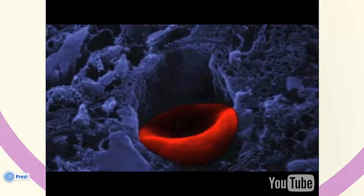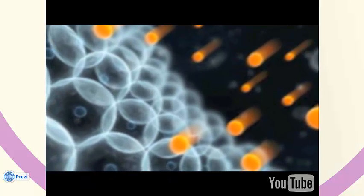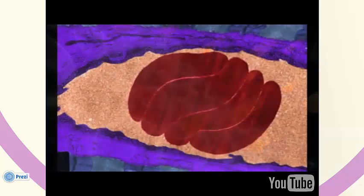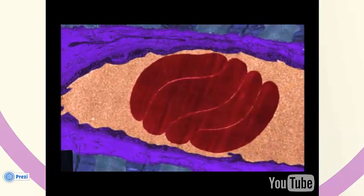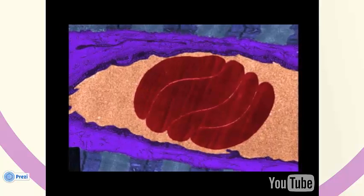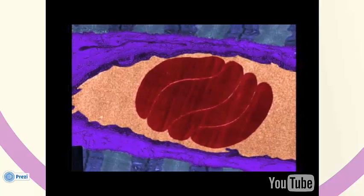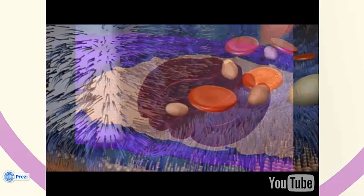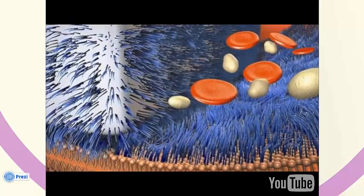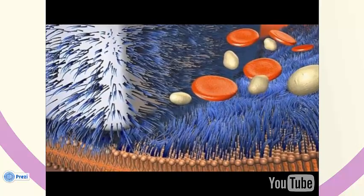The fenestrae make these cells highly permeable, but they are also small enough to prevent the filtration of blood cells. These cells are also covered with a glycocalyx that is thought to play a role in preventing albumin and other plasma proteins from passing through the basement membrane.